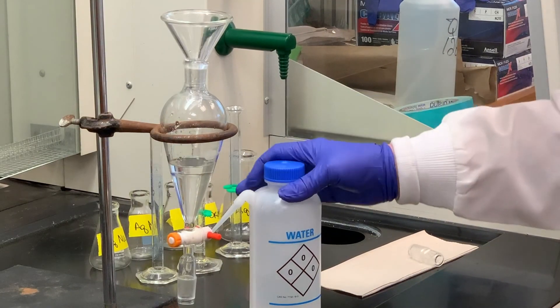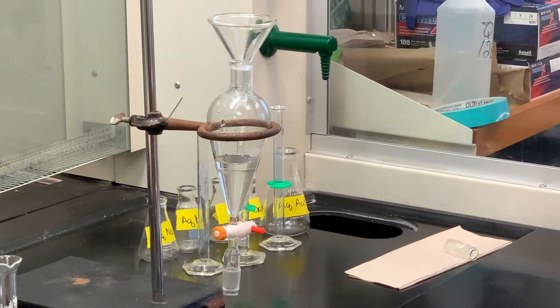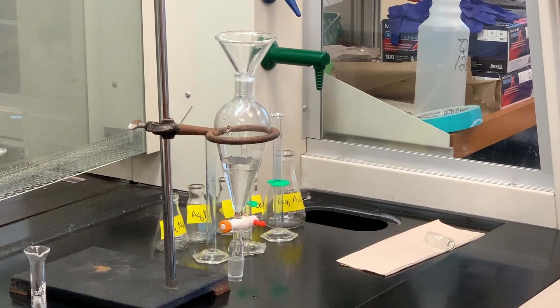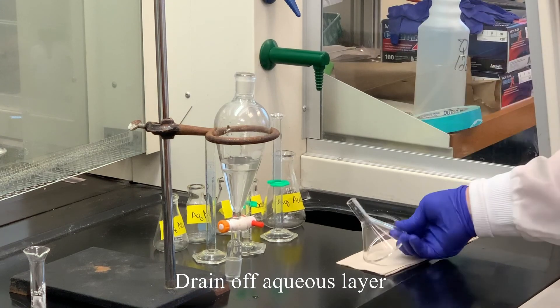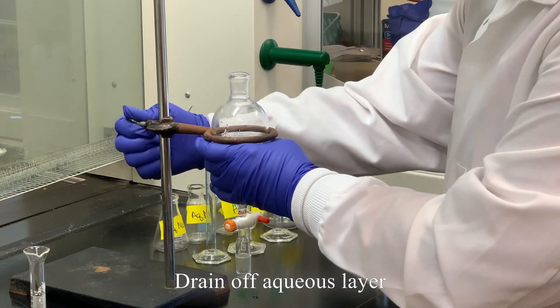So what I want to do first is to drain off, because I don't want to wash the aqueous with anything, I want to wash the organic layer. So what I have to do is drain off the aqueous. In this case, we've realized it was on the bottom. I'm going to raise this up just a little bit.